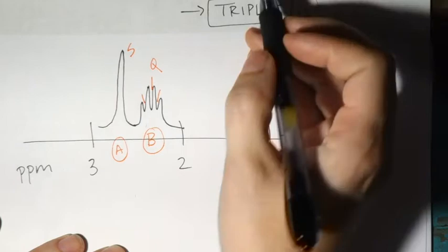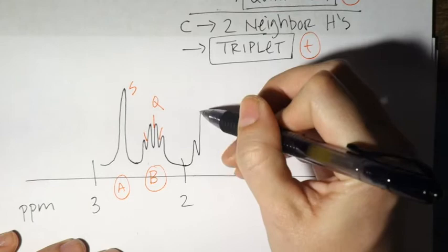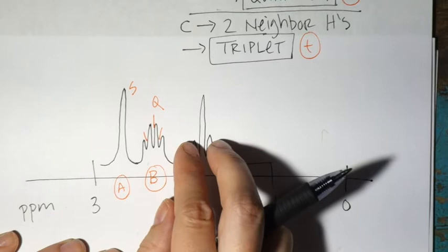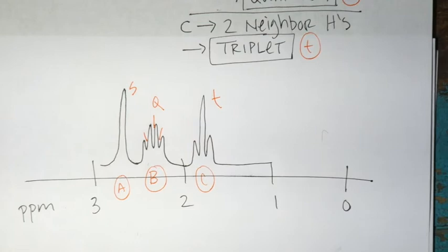Peak C is a triplet — in the one-to-two region. It will have one big peak in the middle with shorter outer peaks. That's the triplet shape, abbreviated 't'. So from the NMR we can assess where peaks are (environment/chemical shift) and now we also know how many neighbors each peak has — that's the multiplicity.